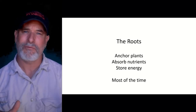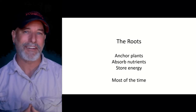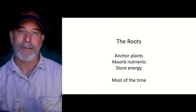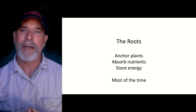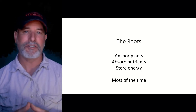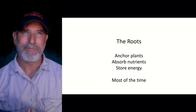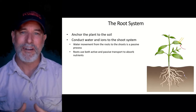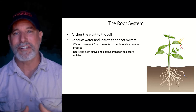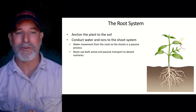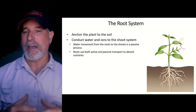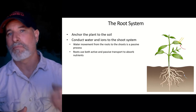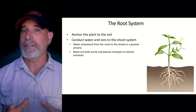So roots — what do roots do? They anchor plants to the soil, and they're where the plant absorbs nutrients and water. Sometimes they can store energy as well. Here's a diagram of a plant, and you can see the roots are down in the soil anchoring the plant. As they absorb all their nutrients and water, the vascular system will then transport it up to the leaves.